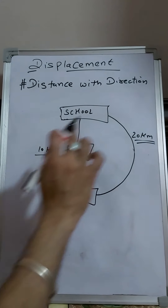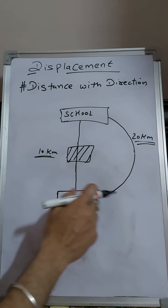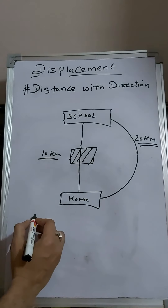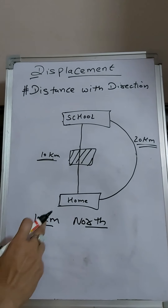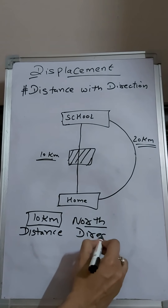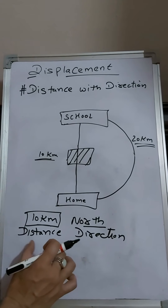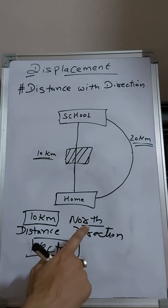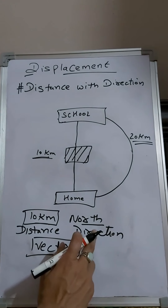You take a detour because the direct path is blocked. To travel 10 kilometers takes some time; to travel 20 kilometers it takes more time. But if someone asks about your displacement, you can say you traveled 10 kilometers north. So 10 kilometers tells about the distance and north is the direction — that is displacement. It has both magnitude and direction, so displacement is a vector quantity.